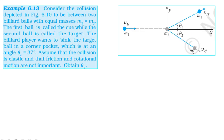Consider the collision depicted to be between two billiard balls with equal masses, M1 = M2. The first ball is called the cue ball while the second ball is called the target. The billiard player wants to sink the target ball in the corner pocket at an angle theta equal to 37 degrees. Assume the collision is elastic and that friction and rotational motions are not important.